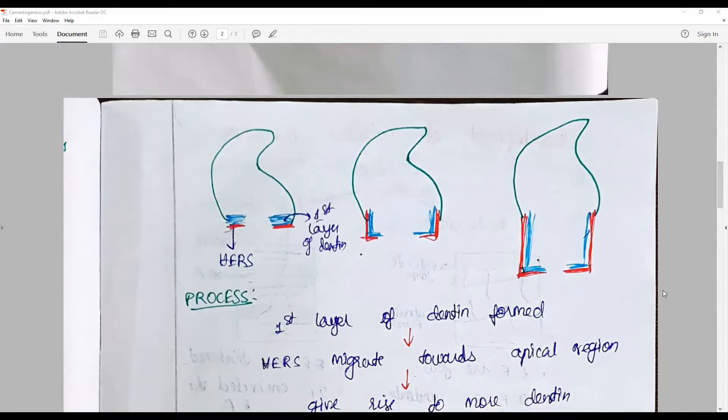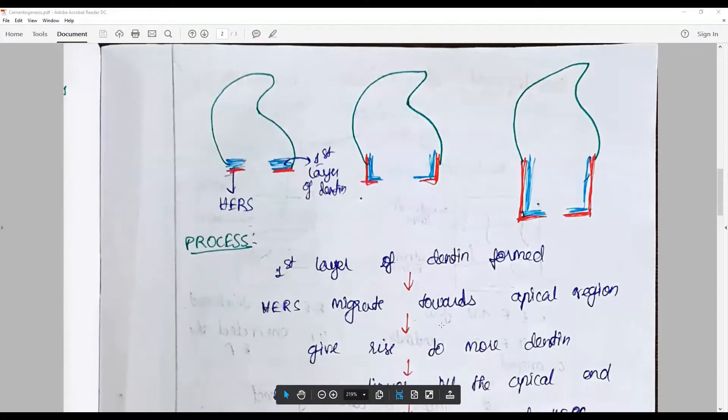We are talking about cementum, so we have to start from the formation of HERS in root formation. When the first layer of dentin is formed, the reduced enamel epithelium proliferates downwards as the epithelial Hertwig's root sheath, or HERS. They start to migrate towards the apical region, proliferating through the apical regions.